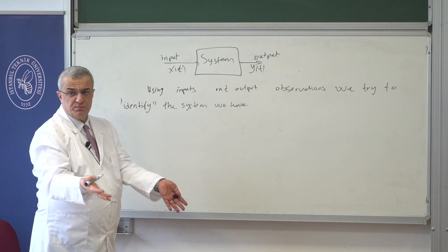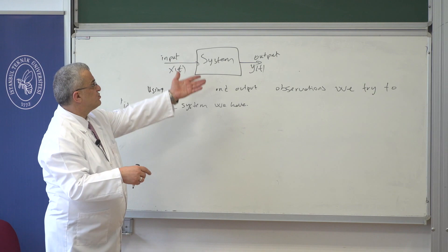I want to clearly teach you continuous time systems and make sure you understand what is what. Then we will start talking about discrete time systems. When you talk about input and output, what would you do as an engineer? If input and output are the only things available to you, you would do observations: for this input I got this output, for that input I got that output. You would try to identify the system — come up with a mathematical model — using input-output observations.